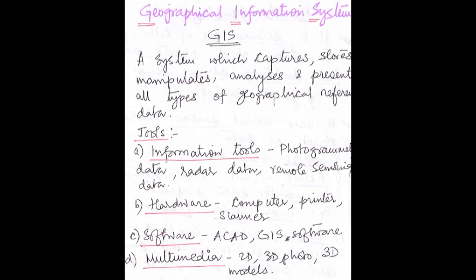Next I will talk about the Geographical Information System — GIS. In GIS we capture, store, manipulate, analyze, and present all types of geographical reference data. There are four categories of tools used: number one, information; number two, hardware; number three, software; and number four, multimedia. Under information tools it includes photogrammetry data, radar data, and remote sensing data.